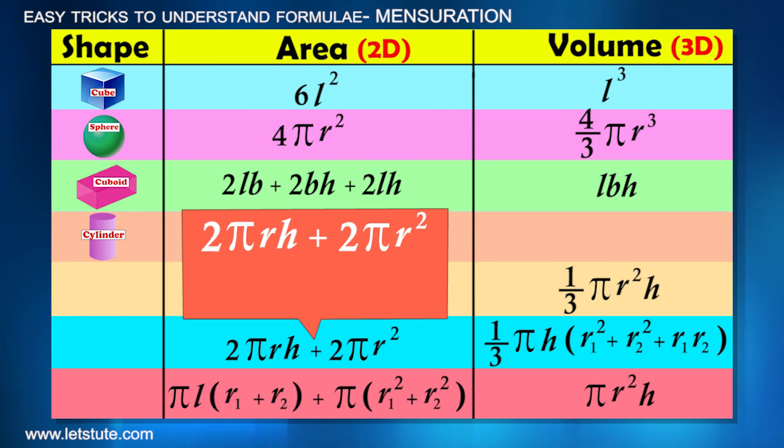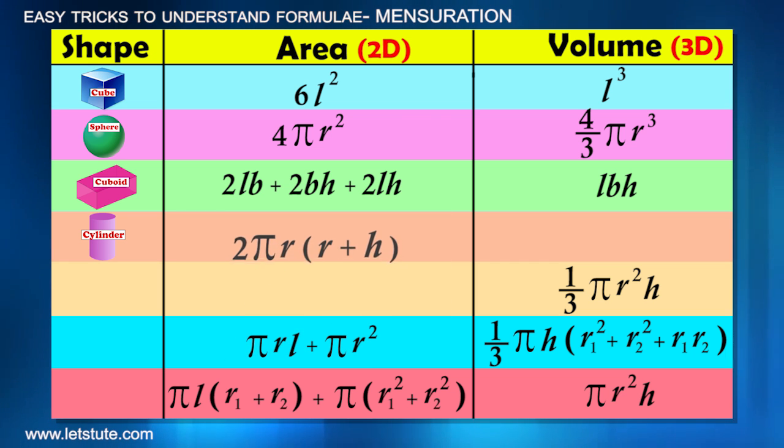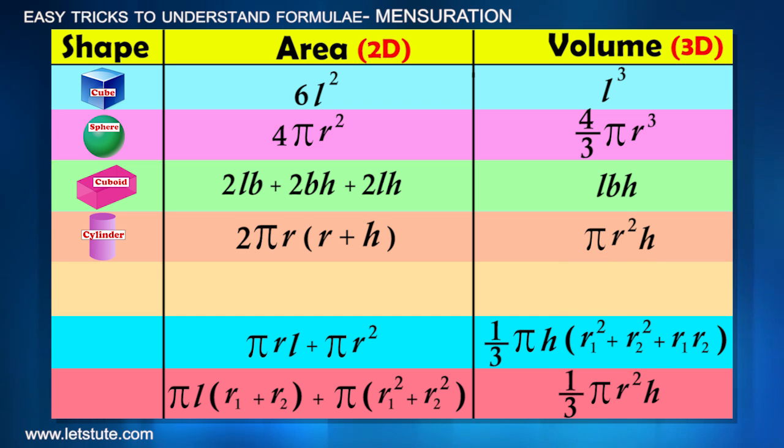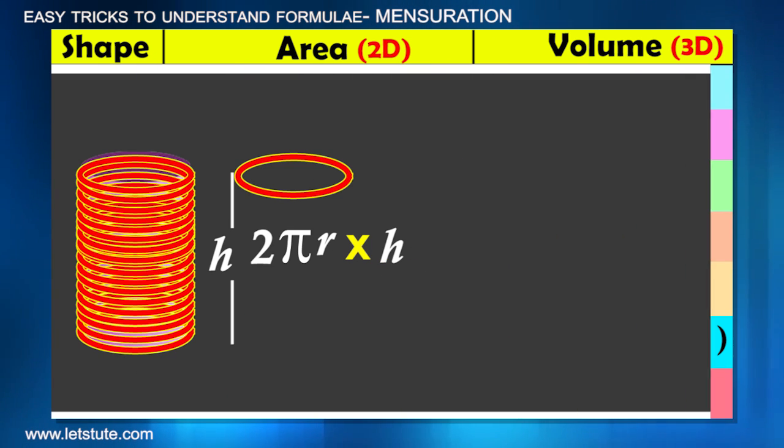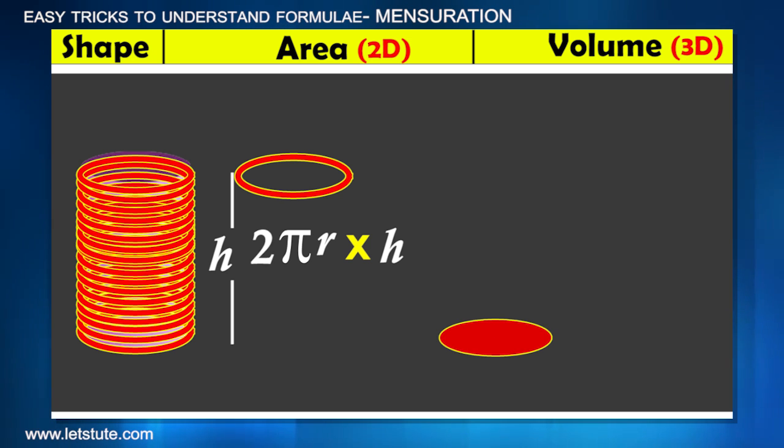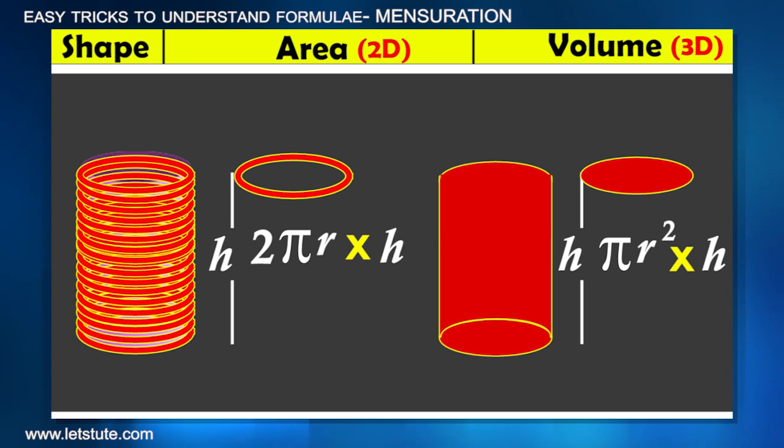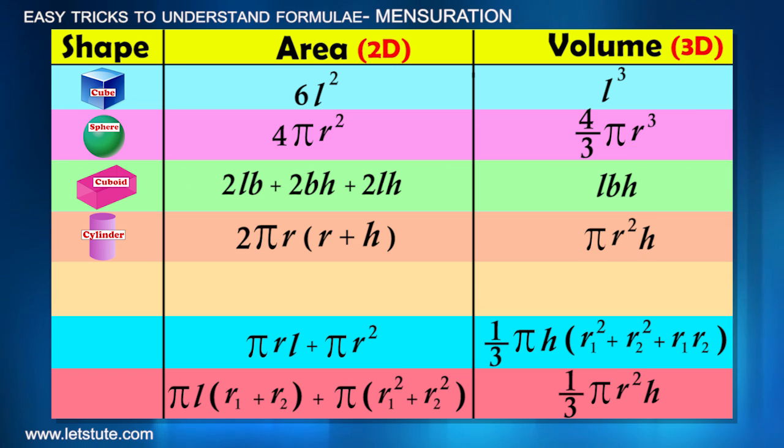And therefore, totally it is 2π r (R + H). Can you figure out the formula for volume? Yes, it is π r² h, area of the base multiplied with height, like we put rings to height H. Similarly, now if we put disk to height H, we get volume.